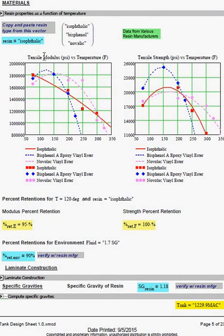The material, the resin type is input on page 5, and there is a temperature loss is computed based on values provided by resin manufacturers.